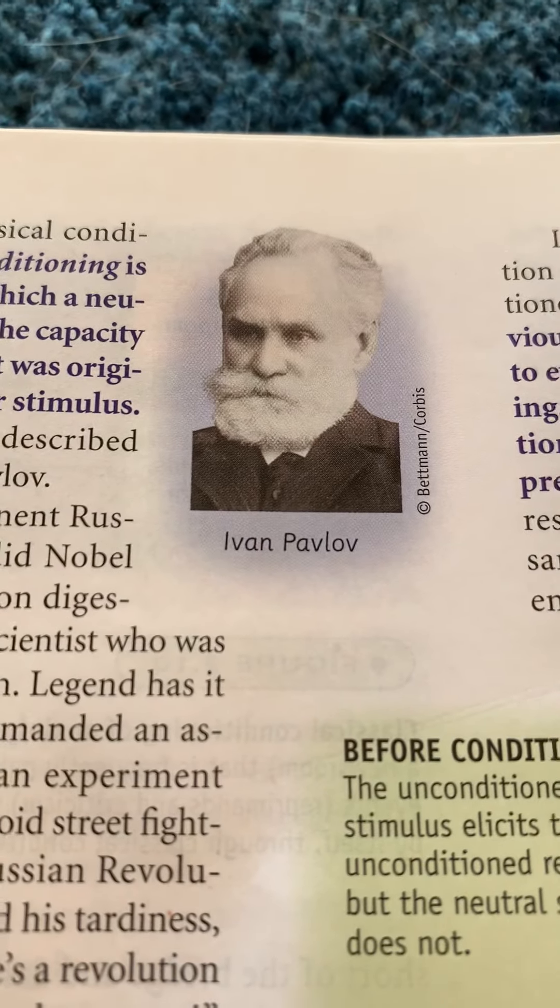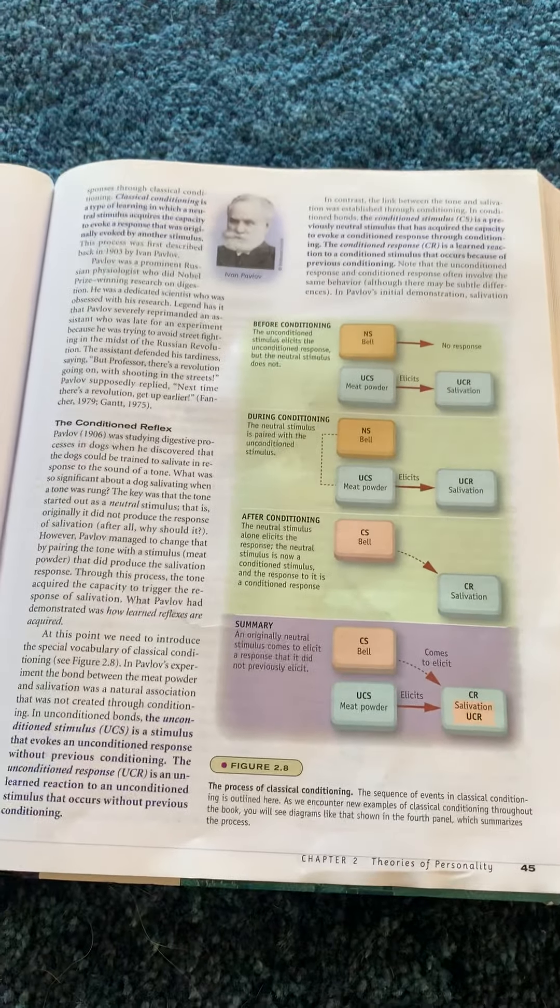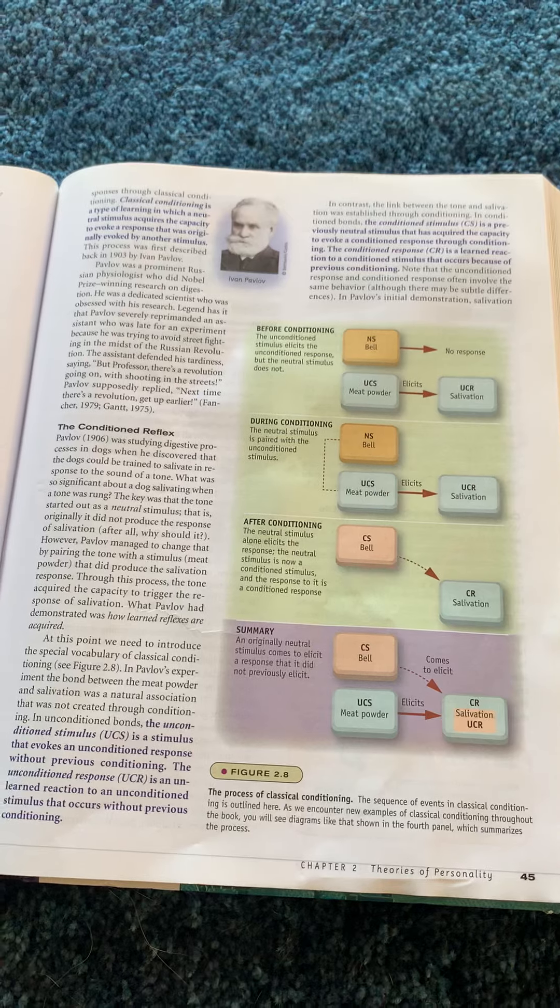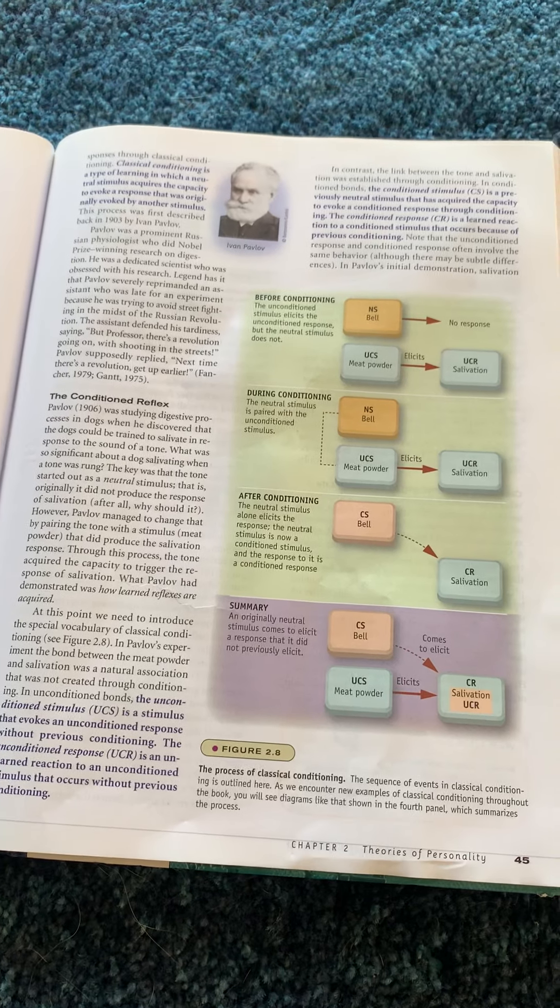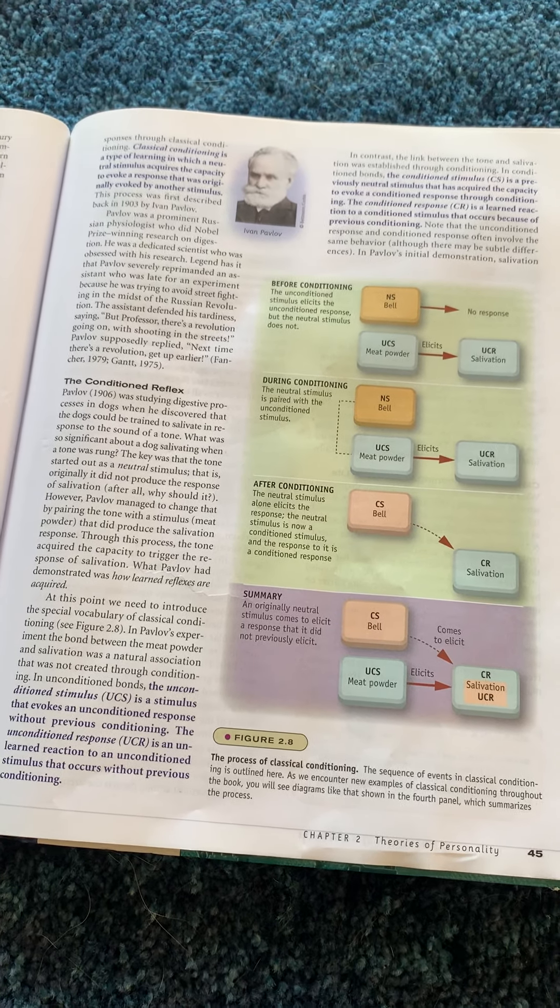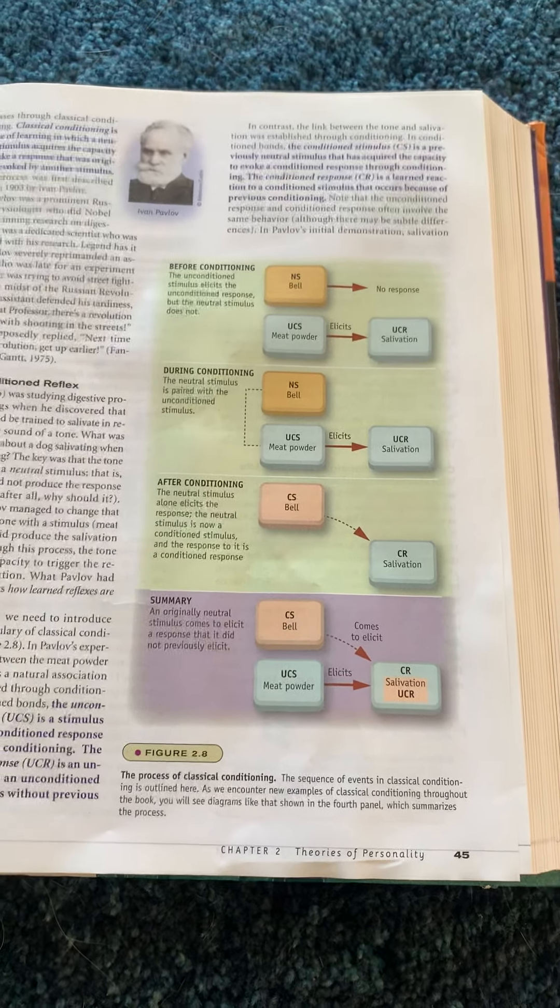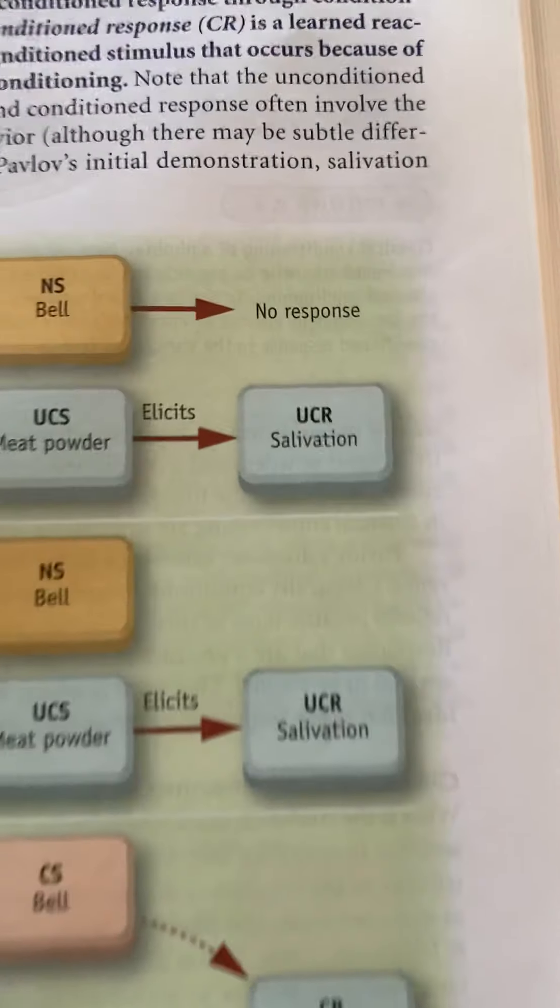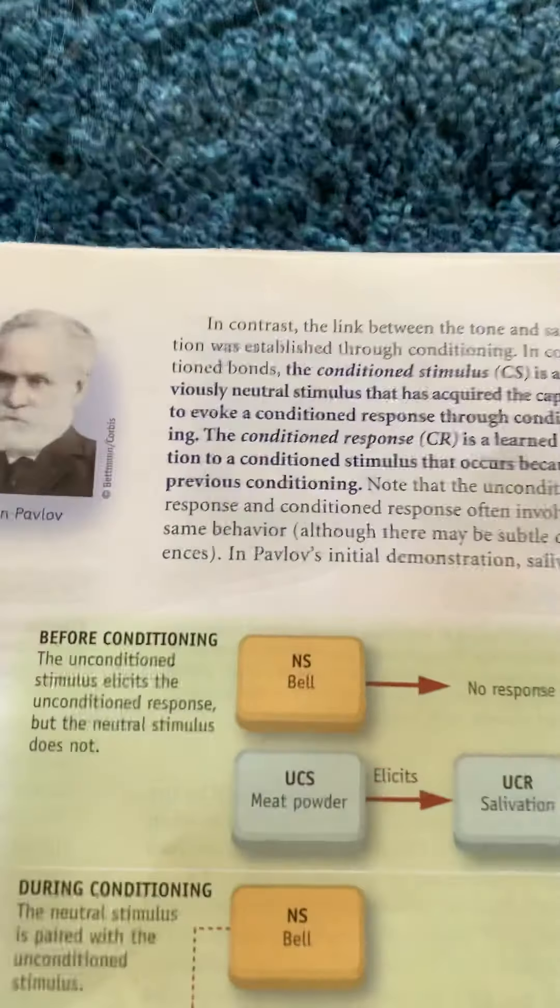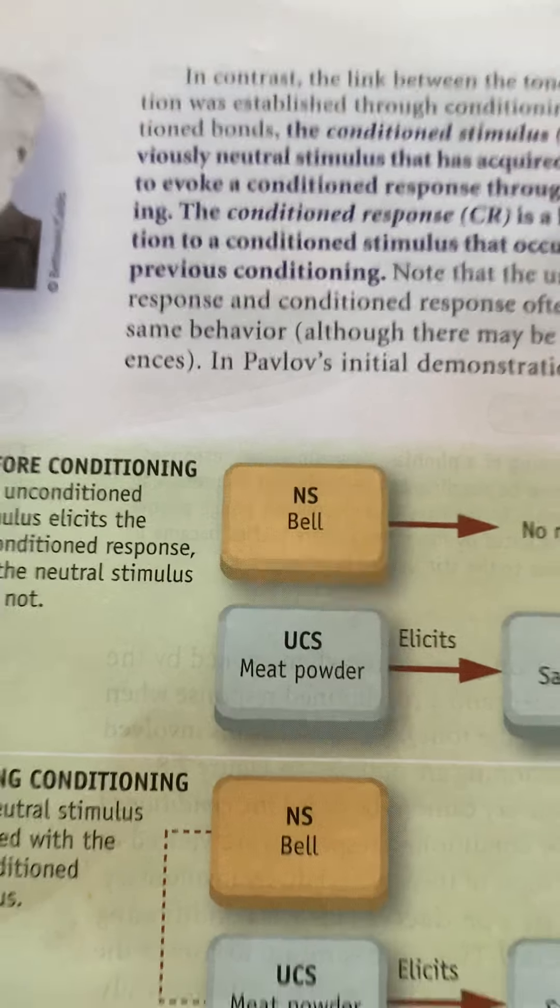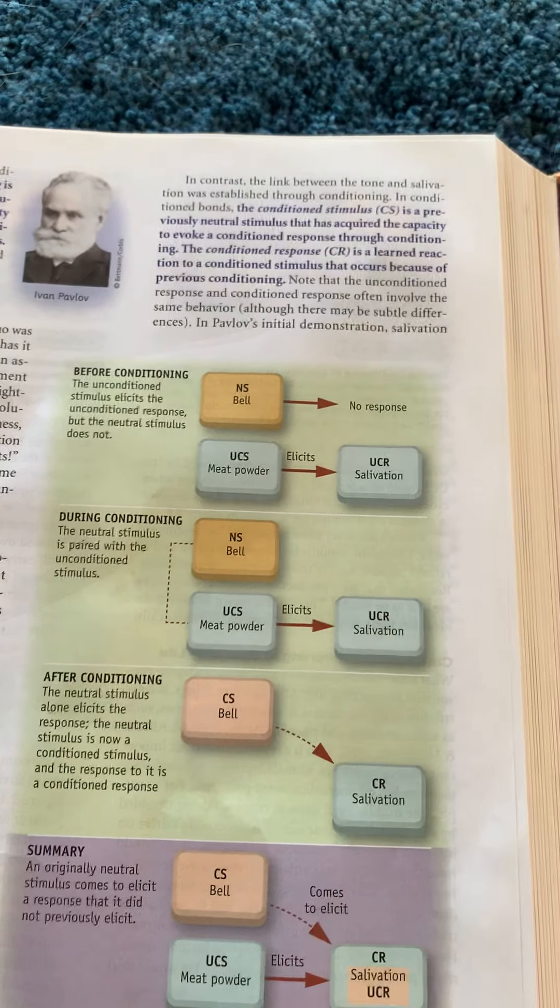So classical conditioning - this guy Ivan Pavlov, very long time ago, had an idea. He wanted to see if he could make his dog do something natural by doing something unnatural. What that means is he wanted to see if he could make his dog salivate, so slobber, by ringing a bell.